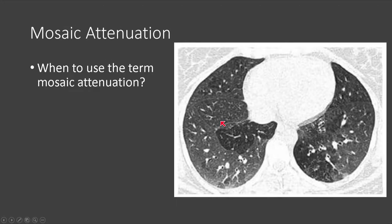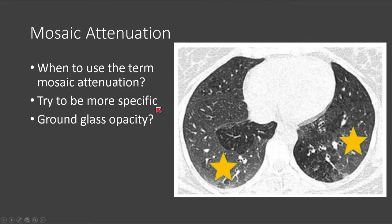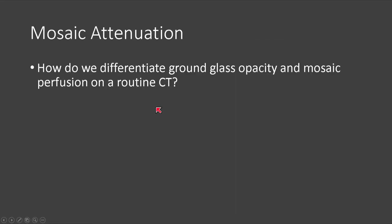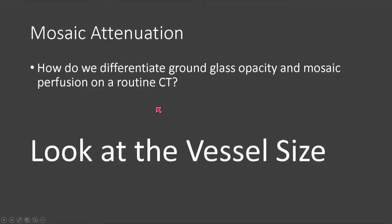We use the term mosaic attenuation initially as a descriptive term — we might say there is a widespread mosaic attenuation abnormality on CT. But our job is to be more specific: are we looking at ground glass opacity in the denser areas, or mosaic perfusion in the more lucent areas? The key to differentiating them on routine CT is to look at vessel size.